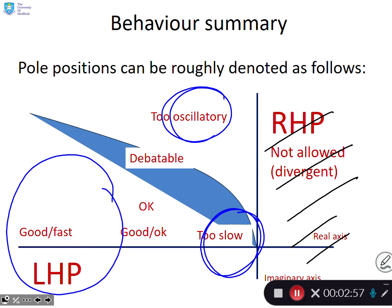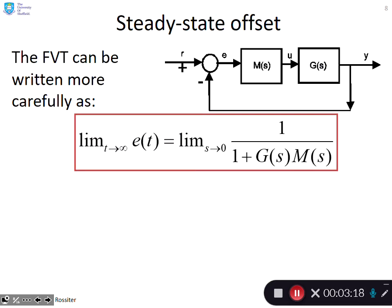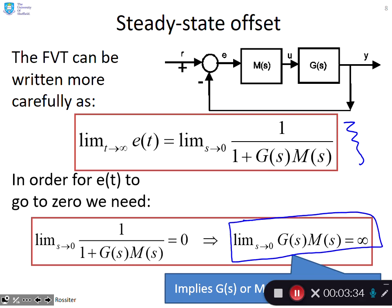What about closed-loop transfer functions? You should be confident in computing basic closed-loop transfer functions from target R to output Y. What about steady-state offset? You should be familiar with the formula for calculating steady-state offset, and for it to be zero, either G or M must include an integrator.